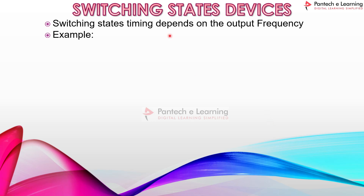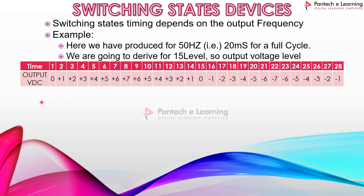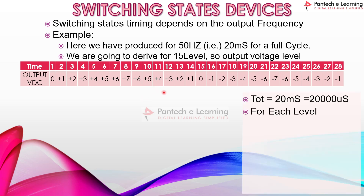Next, let's see the switching states with a detailed example. The switching state timing depends upon the output frequency. For 50 Hz, the full cycle is 20 milliseconds. We derive the 15-level output by dividing the cycle into time divisions: 0, +1, +2, +3, +4, +5, +6, +7, then back down +6, +5, +4, +3, +2, +1, 0, then the negative cycle −1, −2, −3, −4, −5, −6, −7, back to −6, −5, −4, −3, −2, −1, 0 — up to 28 time divisions, after which the full cycle continues to repeat, generating the 15-level single-phase inverter output.